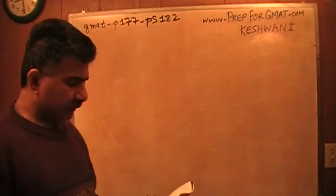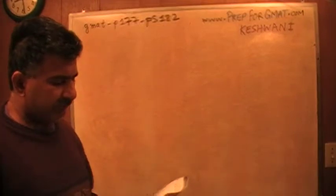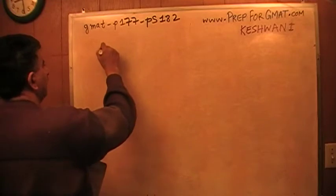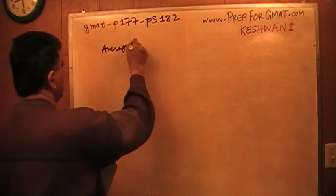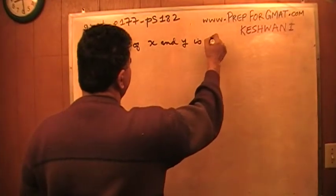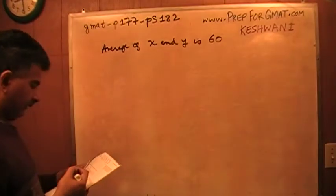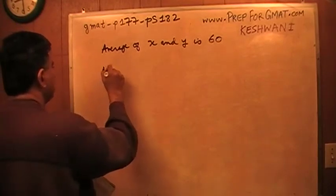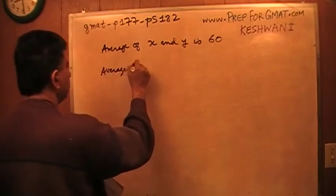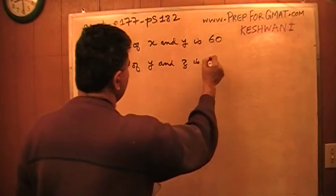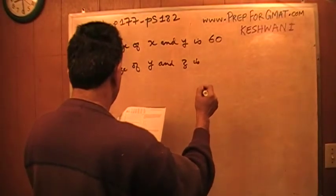It says the average arithmetic mean of x and y is 60. I'm going to make a note here. Average of x and y is 60. And then I'm told that the average of y and z